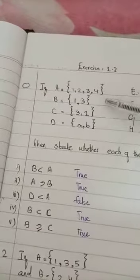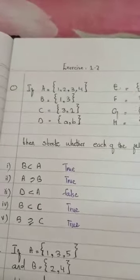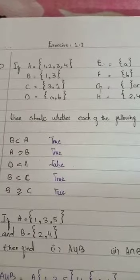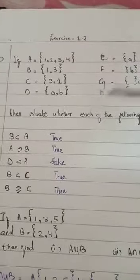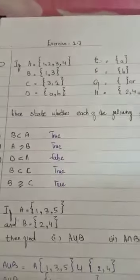So first of all you have to write B is a subset of A, so you have to write true. Because here you will see if the B set's elements are the same, the elements are the same.